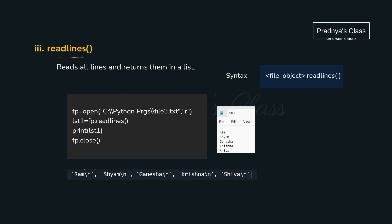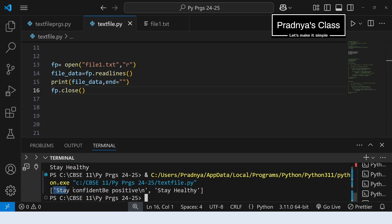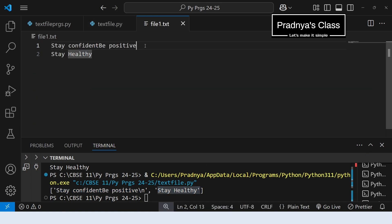Here is the third function for reading file content: readlines(). It reads all the lines but returns them in the form of a list of strings. Note that in case of a list, backslash n will not be interpreted as a new line — it will print as a character at the end of every element of the list. The readlines() function also doesn't take any parameter. In contrast, with readline(), backslash n gets interpreted as a new line, causing an empty line.